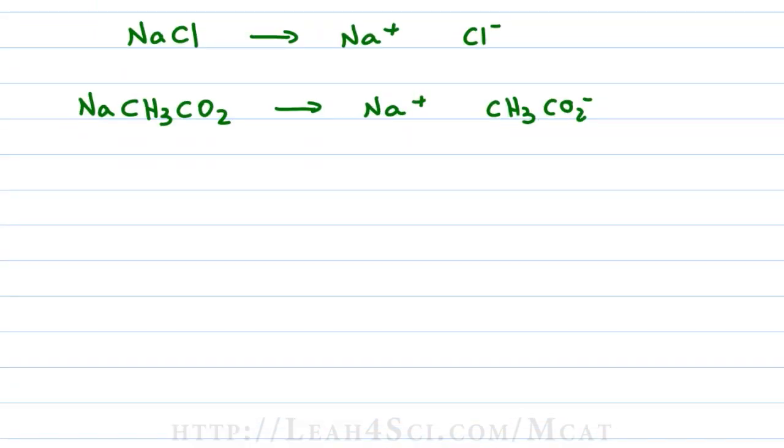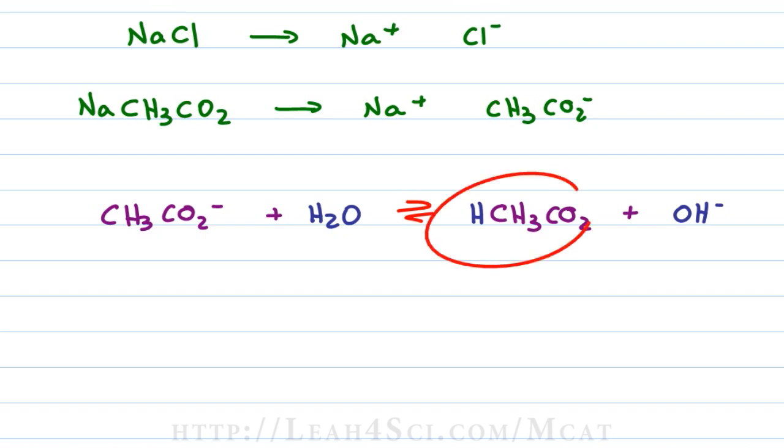If we write out the reaction, we'll see that we have CH3CO2-, the starting base in solution, reacting with H2O to give me an equilibrium that has acetic acid formed from the hydrogen of water and acetate the starting base and then OH-. If we now analyze what we have in solution, we have some acetic acid which will be an equilibrium between acetic acid and acetate but we also have hydroxide and hydroxide is a base which means the pH of the solution will be greater than 7.